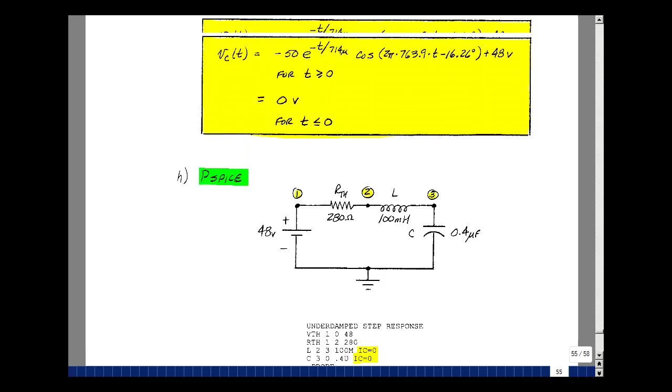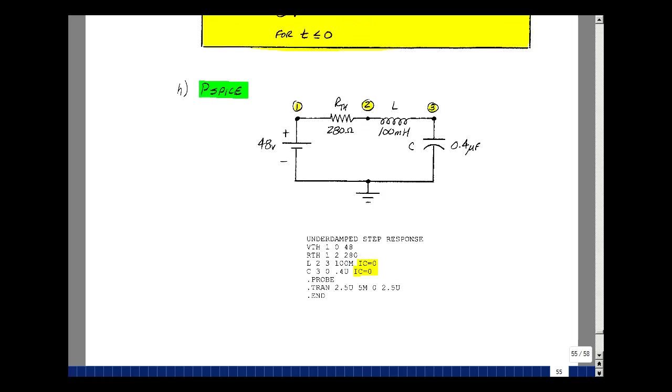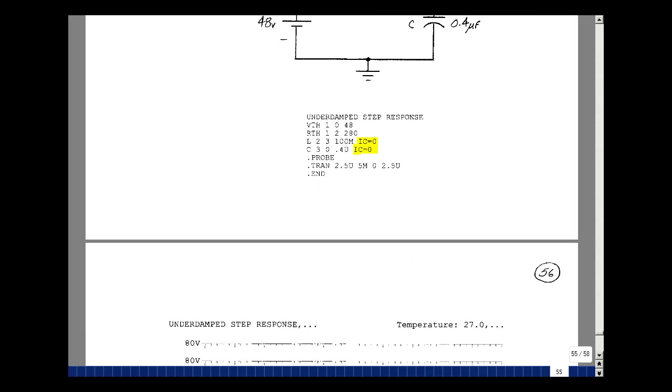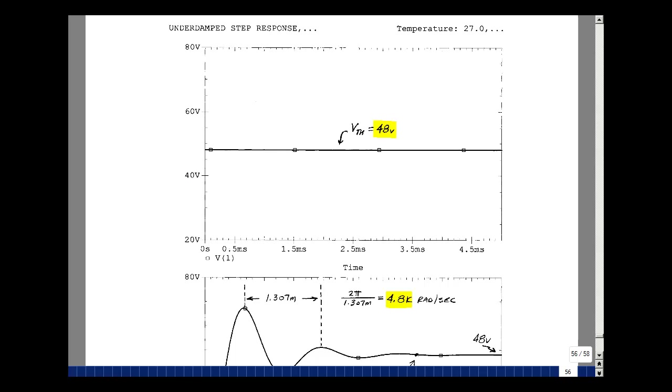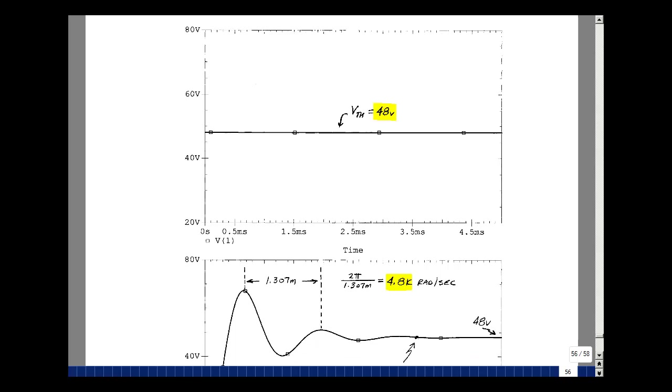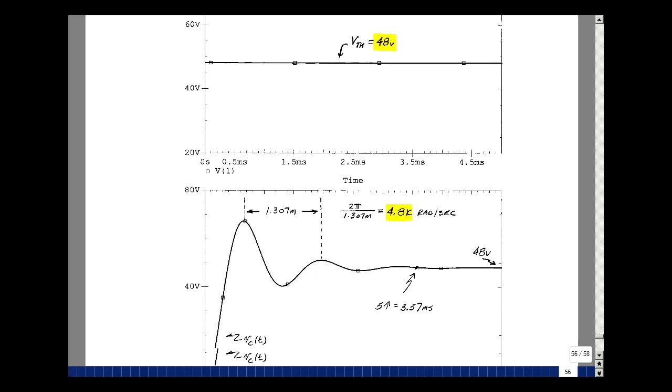Before we look at the solution, let's take a look at what we might expect the final value to be. So 5 times this is when this term will die out. So a little bit less than 5 milliseconds. Here's node voltage 1. You can see it at t equals 0 plus it jumps from 0 to 48 volts.